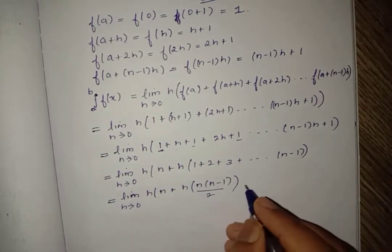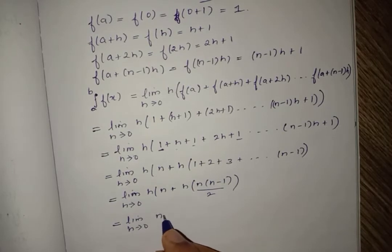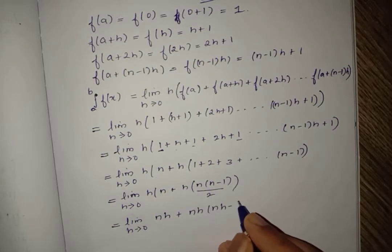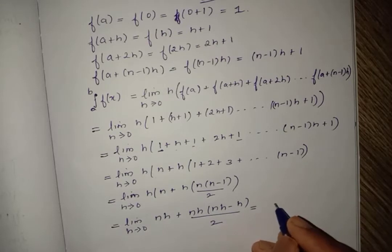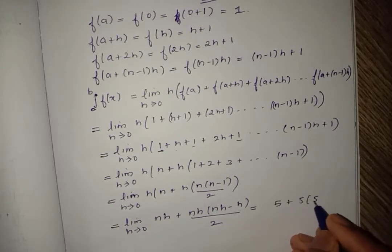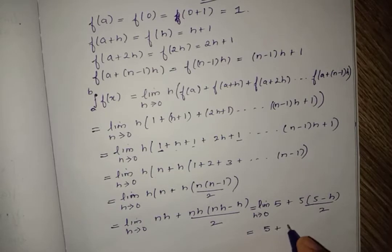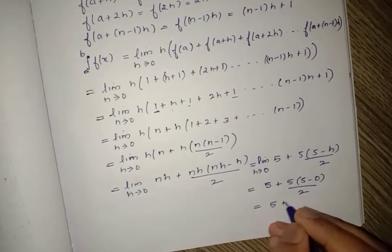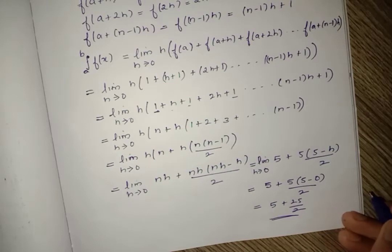Rearranging, we get limit h tends to 0 of [nh + nh·(nh - h)/2]. We have found nh = 5, so substituting: 5 + 5·(5 - h)/2. As h tends to 0, the final answer is 5 + 5·5/2 = 5 + 25/2. So the first answer is 5 + 25/2. Let us move to the second question.